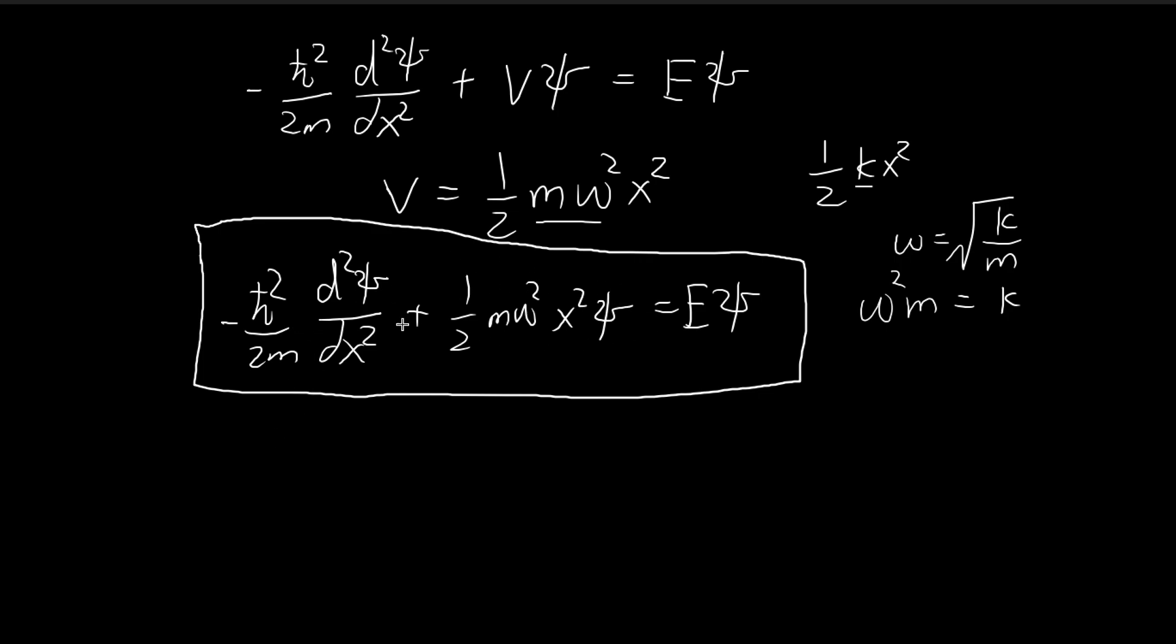And to arrive at this special algebraic method, we're going to have to rewrite this Schrödinger equation in a slightly different form. So first of all, notice that we can rewrite this double derivative term as something like this.